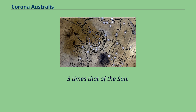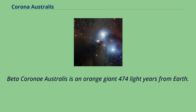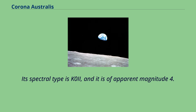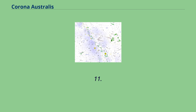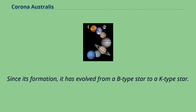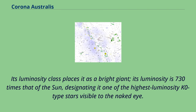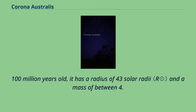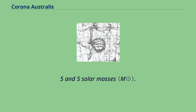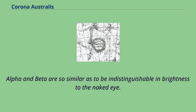Beta Coroni Australis is an orange giant 474 light-years from Earth. Its spectral type is K0 II, and it is of apparent magnitude 4.11. Since its formation, it has evolved from a B-type star to a K-type star. Its luminosity class places it as a bright giant; its luminosity is 730 times that of the Sun, designating it one of the highest luminosity K0-type stars visible to the naked eye. 100 million years old, it has a radius of 43 solar radii and a mass of between 4.5 and 5 solar masses. Alpha and Beta are so similar as to be indistinguishable in brightness to the naked eye.